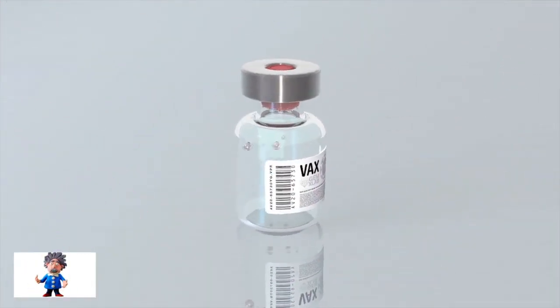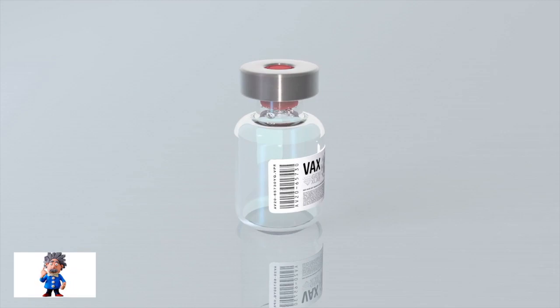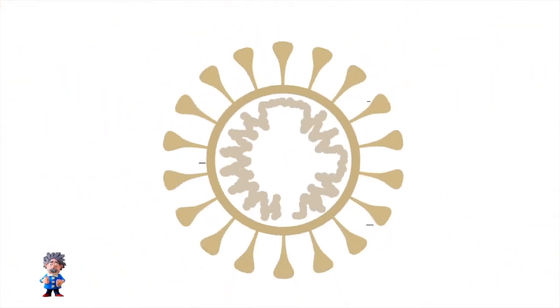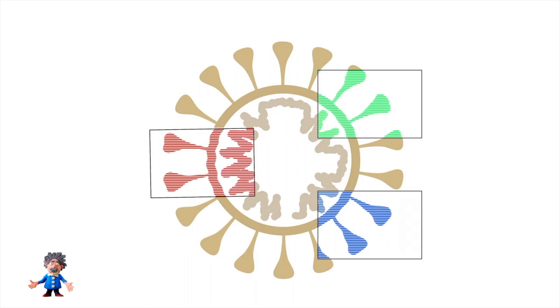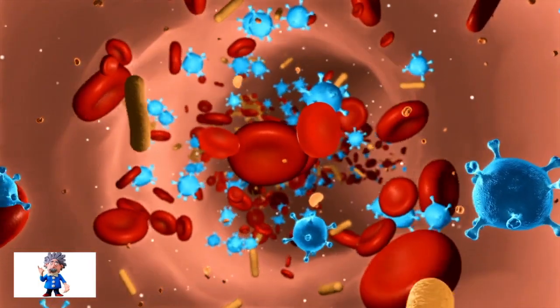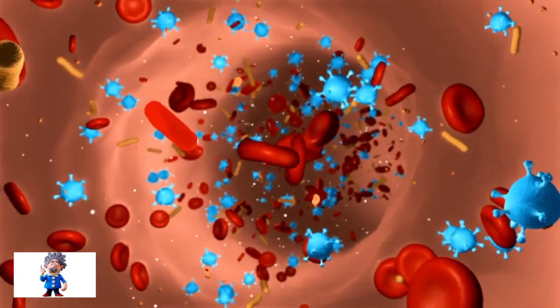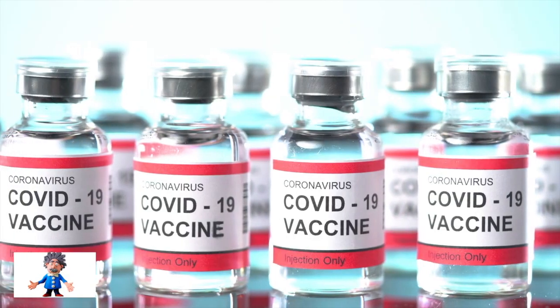Current vaccines have been designed to target the spike protein from the original Wuhan strain. Some of the mutations in this new variant may mean that the virus can spread easily or make the vaccines less effective.